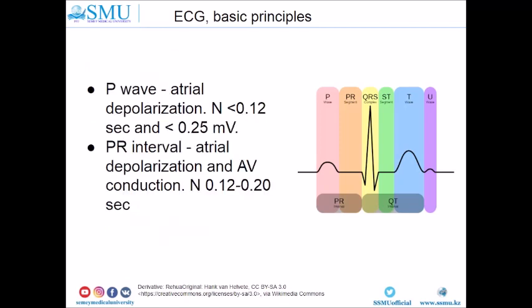During the assessment of the P-wave, you should pay attention not only to the duration but also to the amplitude and morphology. If you have a PR interval more than 0.20 seconds, it can be a sign of AV block. If it is less than 0.12 seconds, it can be a sign of WPW syndrome.